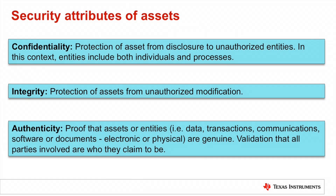The protection of assets boils down to the attempt to guarantee certain attributes of those assets. The three most commonly desired security attributes are confidentiality, integrity, and authenticity. Confidentiality means that an asset is only disclosed to authorized entities — that is, secrets are kept secret. Integrity means that an asset is only modified by an authorized entity and unauthorized changes can be detected. Finally, authenticity means that an asset is genuine or valid with a provable origin. Not all of these security attributes will apply to a particular asset, but at least one will.